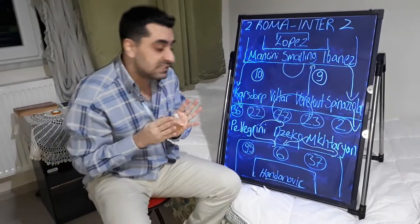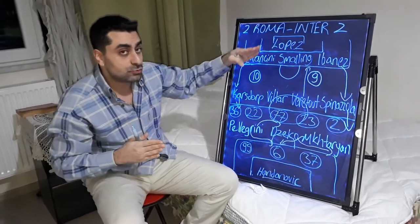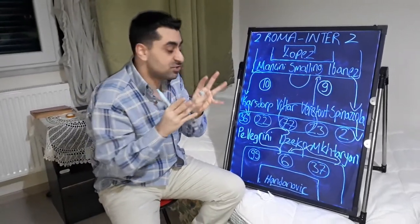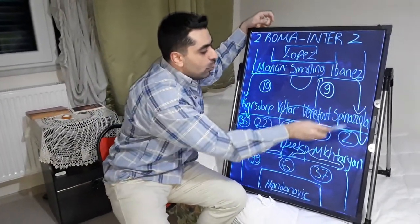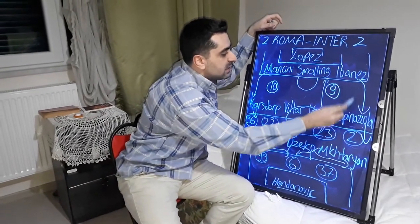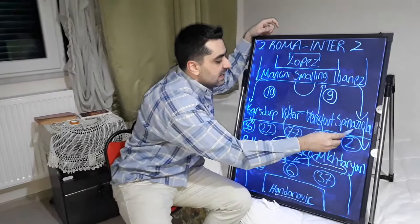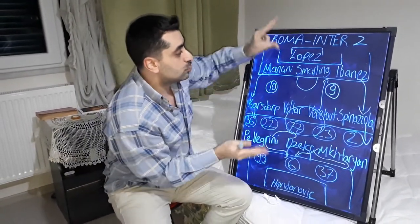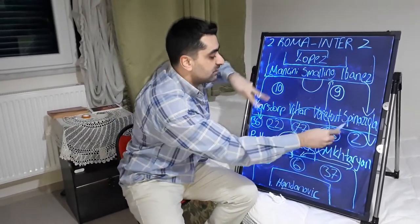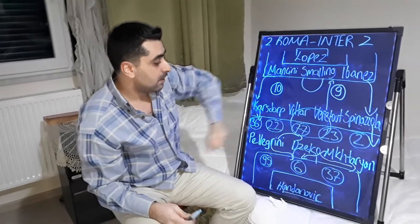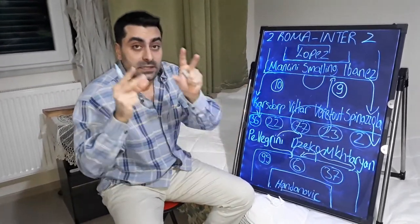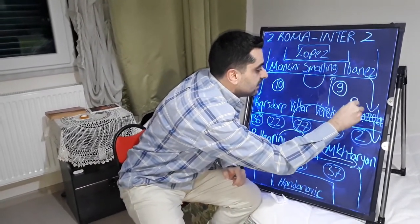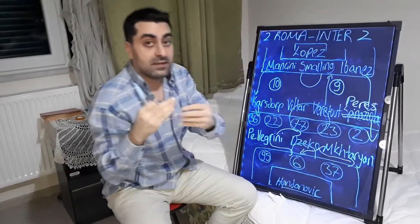And in the second half, Inter started to play better. In the second half, they made so much pressure on Roma. Roma's left wing was so weak. The left wing, Ibáñez and Spinazzola. This wing was so weak. Inter developed dangerous attacks from the right with Hakimi against Roma. But after Paulo Fonseca made substitution, Spinazzola out, Perez in, because left wing was so weak.